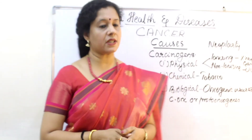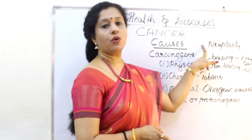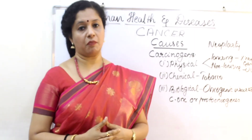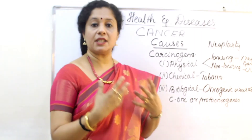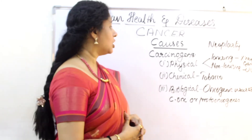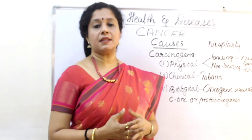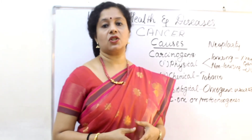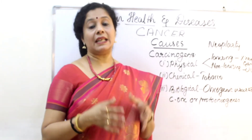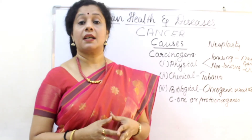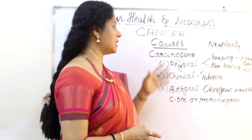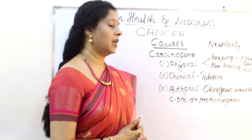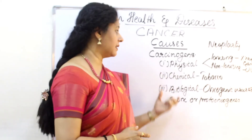Let's now talk about the causes of cancer. First, we should know what neoplasty is. The formation of a new tumor is called neoplasty, and neoplastic cells means tumor cells or cancerous cells. The substances which can trigger cancer can be biological agents, physical agents, or chemical agents. Together these substances are called carcinogens — agents which can cause or trigger cancer or tumor formation.